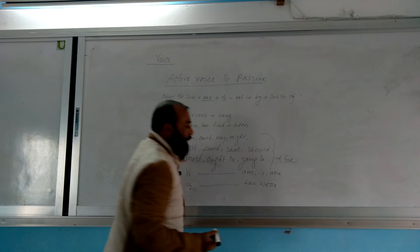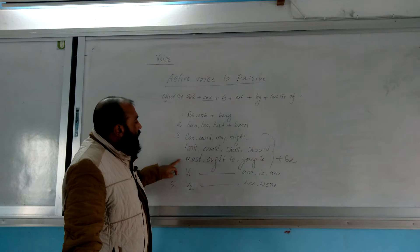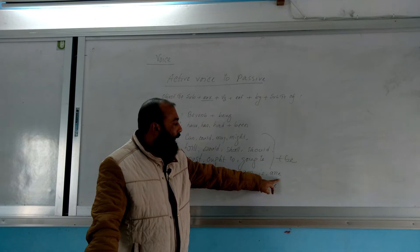If the sentence is in present tense, then we will add is or are. If it's in past tense, we will add was or were. Clear? Let me repeat: if be verb is there, add being. If have/has/had is there, add been. For other auxiliary verbs, add be. If no auxiliary verb and main verb is in base form, add is/are. If past form, add was/were. Clear?